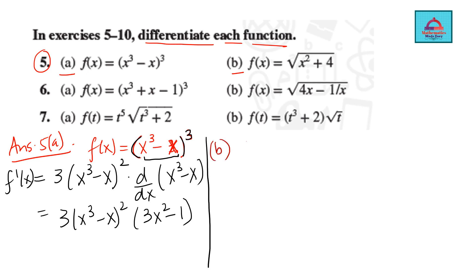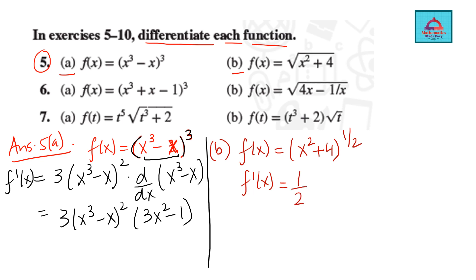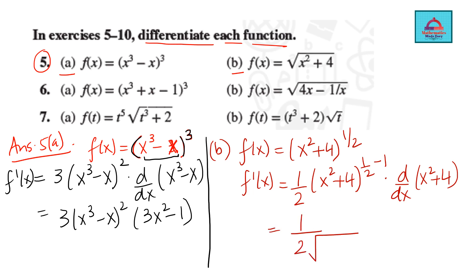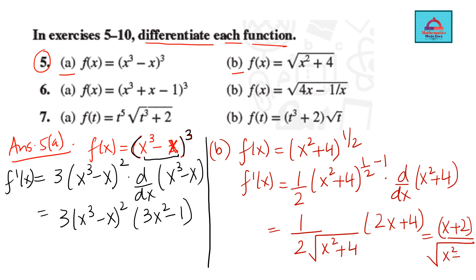For question 5b, there is a radical sign, so we rewrite the function using a power of 1/2 — this is positive square root. Now we can apply power rule and chain rule together. Power rule: power 1/2 comes down, inside function (x² + 4) as it is, power reduces by 1. Then differentiating the inside function gives 2x. Simplifying: the 2 cancels, leaving the final answer as (x + 2) / √(x + 4).